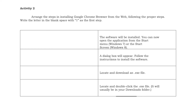Activity 2: Arrange the steps in installing the Google Chrome browser from the web. Following the proper steps, write the letter in the blank space with 1 as the first step.